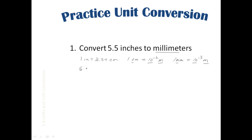We start off the problem with what's given: 5.5 inches, which has two significant figures. We want to get rid of the inches and convert to centimeters, going from a British unit to a metric unit. To make this conversion factor, we divide both sides of the equality by one inch. This side becomes one — and it should, because you don't want to change the amount. So the conversion factor is 2.54 centimeters over one inch.